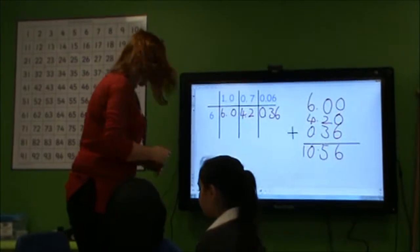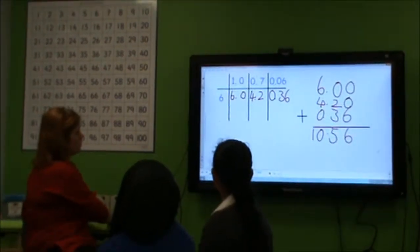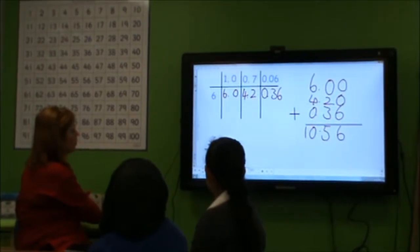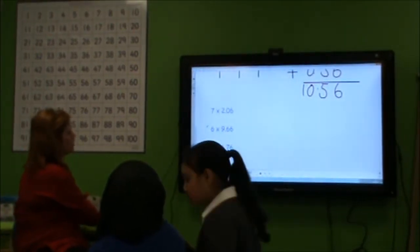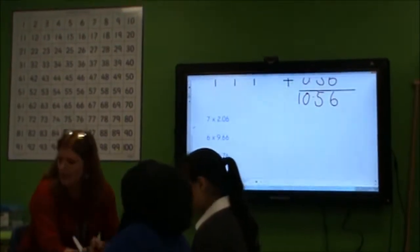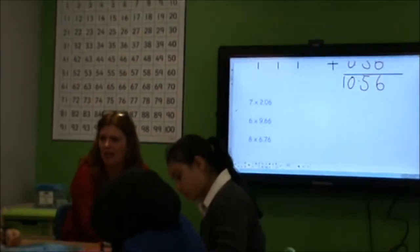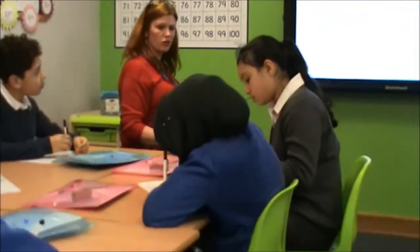What I'd like to do now, I'm going to show you a sum. And on your whiteboard, you're going to have a go. So the first one you've got to do here is 7 times 2.06. So partition your number. Make sure you have room to do the addition at the end. I'm going to come around and have a look at what you do.